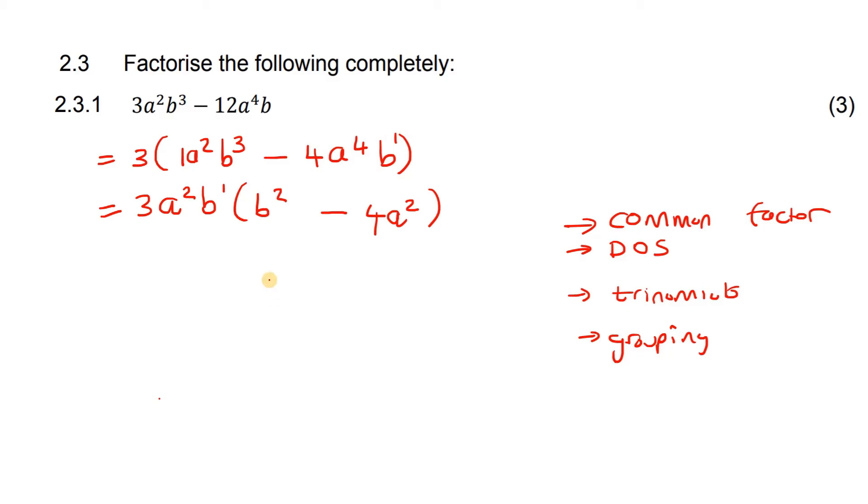Now, something that a lot of learners do is they get this first step, and then they think they're done. But remember, it's a three mark question. That would probably only get you one mark. So now what you do is you move on. We've done common factor. Now we look, what more could we do?